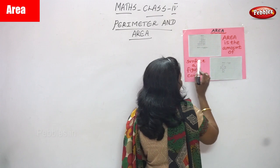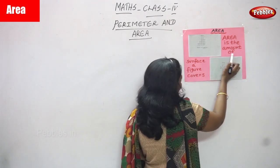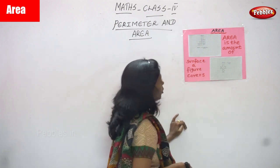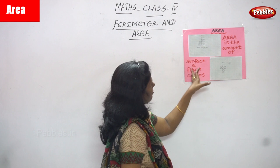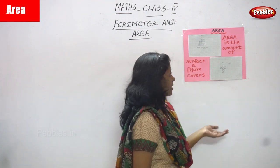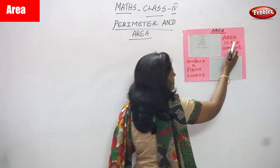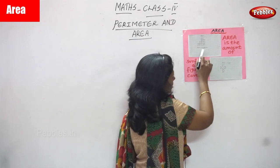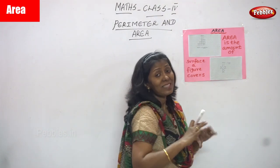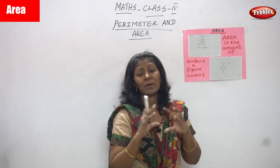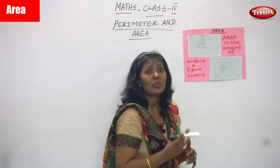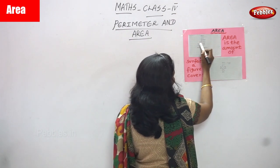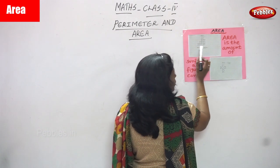So, area is the amount of surface a figure covers. Here, you must find out how much amount of surface this figure covers — that is the inside surface. Look at this figure: one, two, three, four, five, six, seven, eight, nine, ten. Each square you have to consider as one unit.